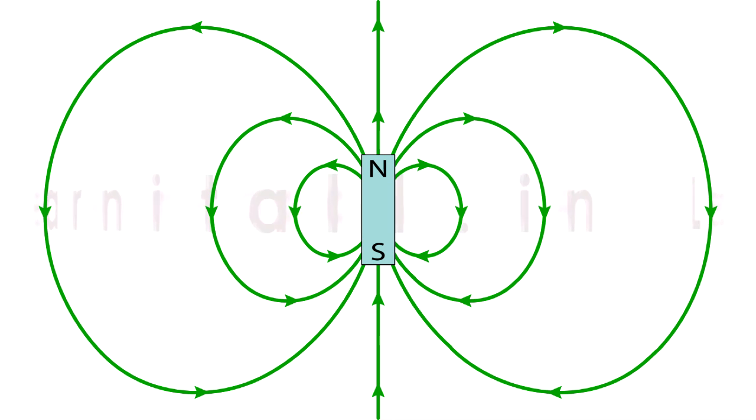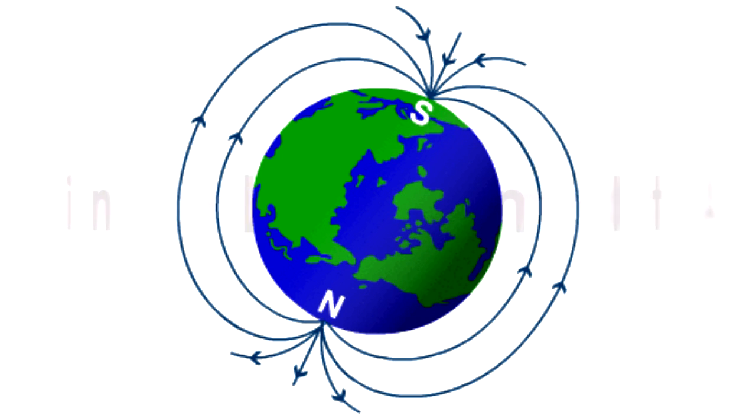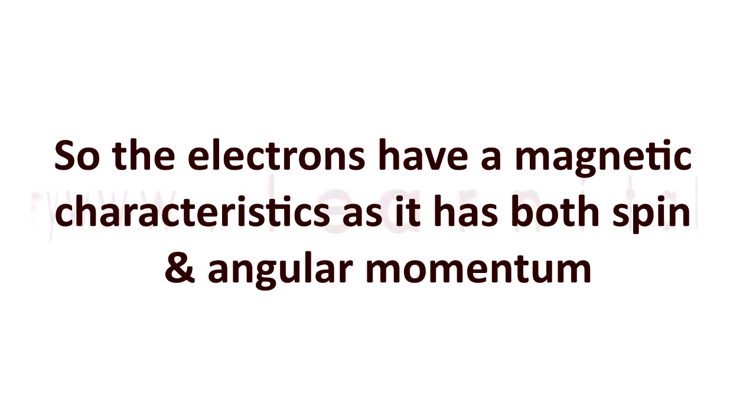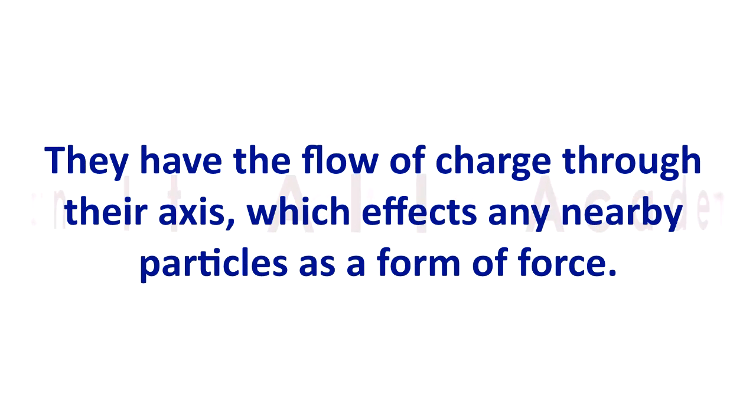Remember the flux lines of a magnet you have studied earlier in your high school? You will definitely find similarity with this picture. It is also responsible for the magnetic polarity. And this is also the reason for which compasses can detect the north and south direction of our planet. So the electrons have magnetic characteristics as it has both spin and angular momentum. They have the flow of charges through their axis which affects any nearby particles as a form of force.